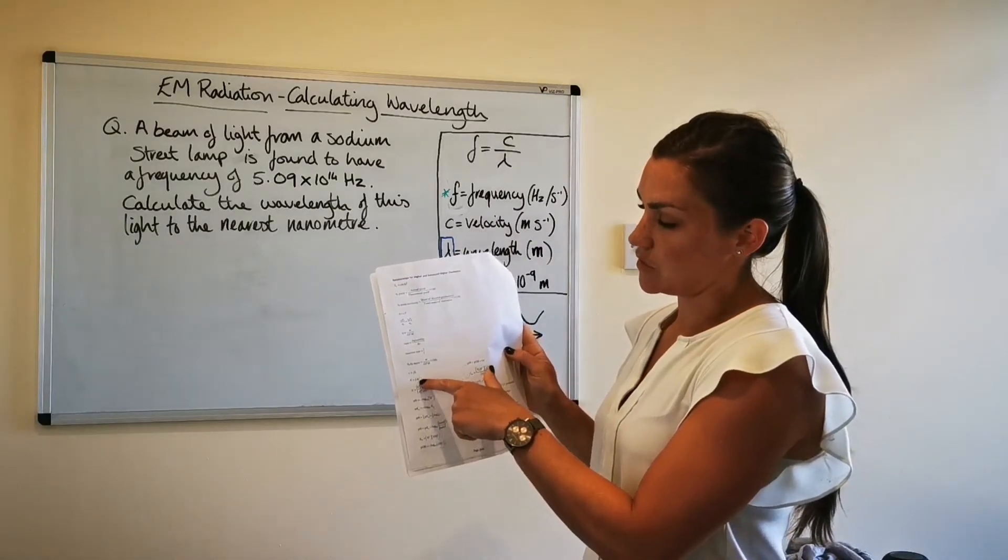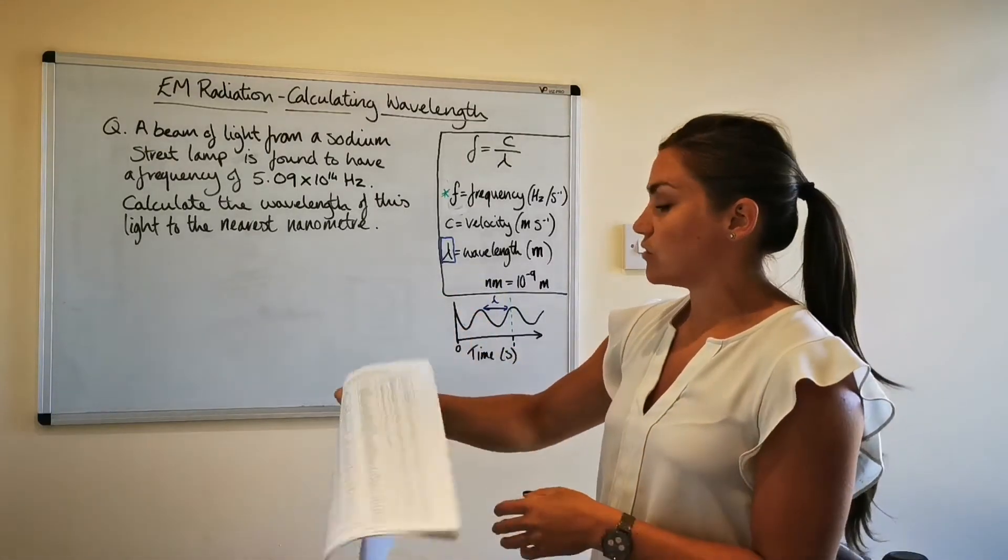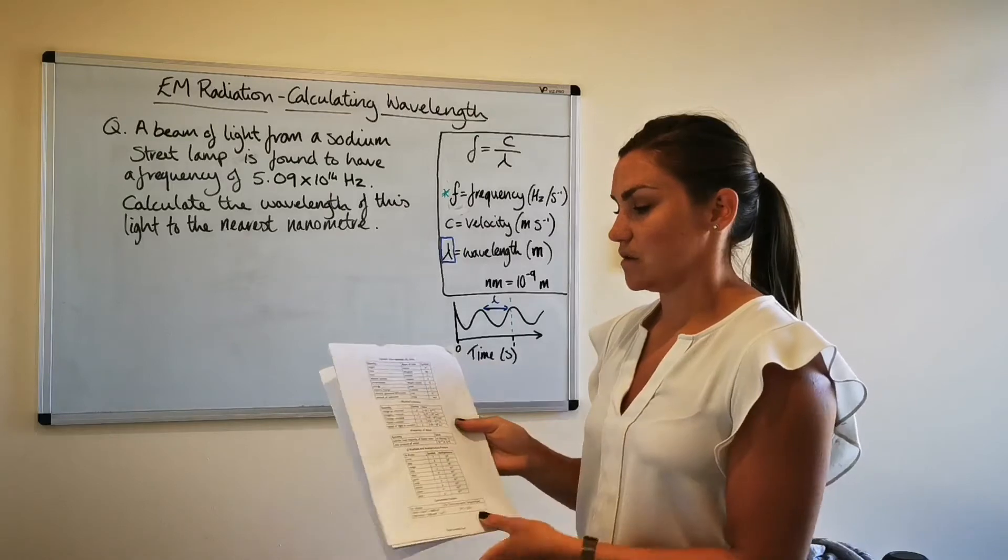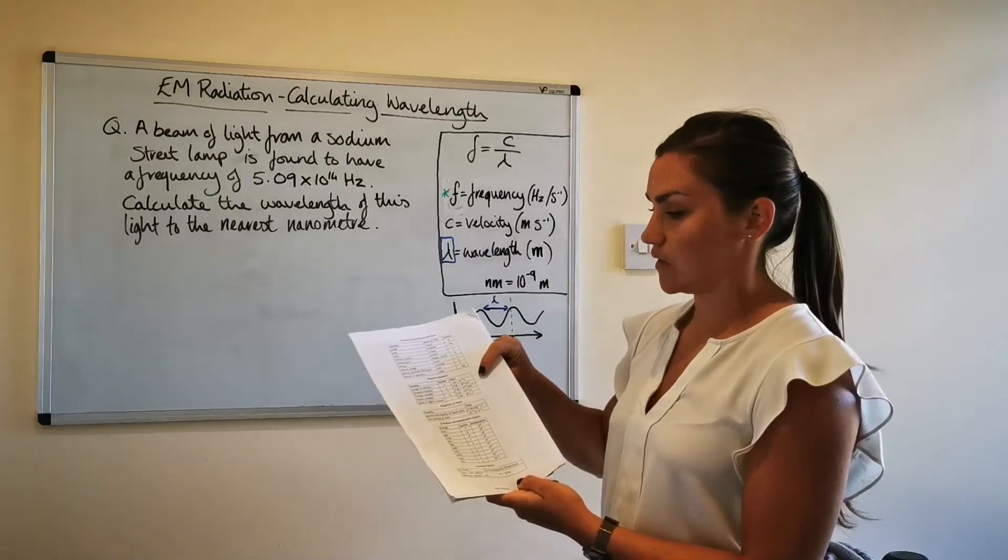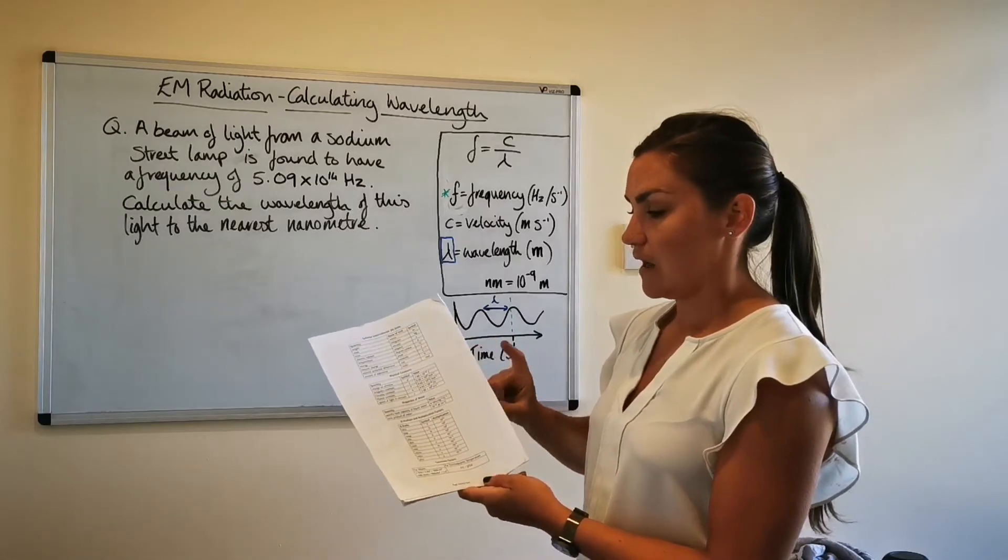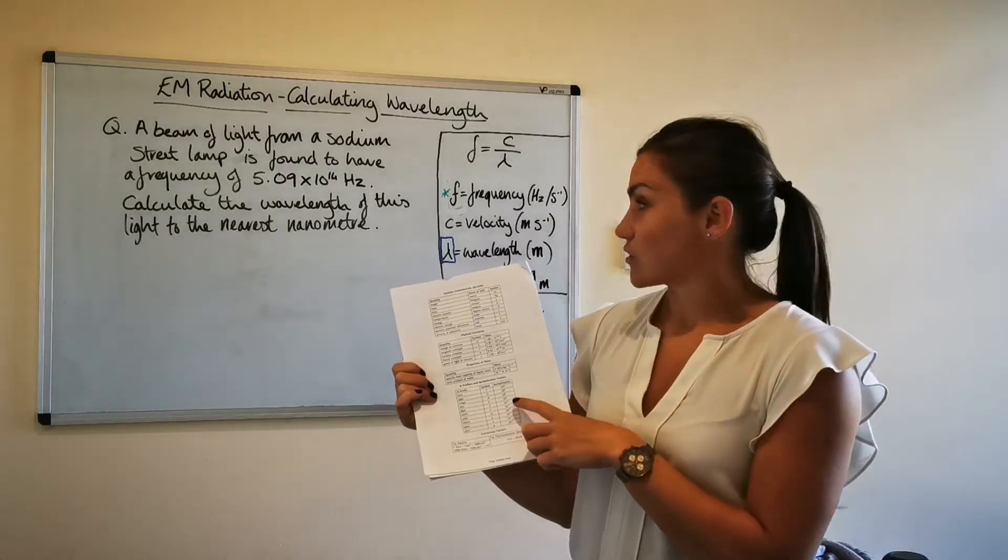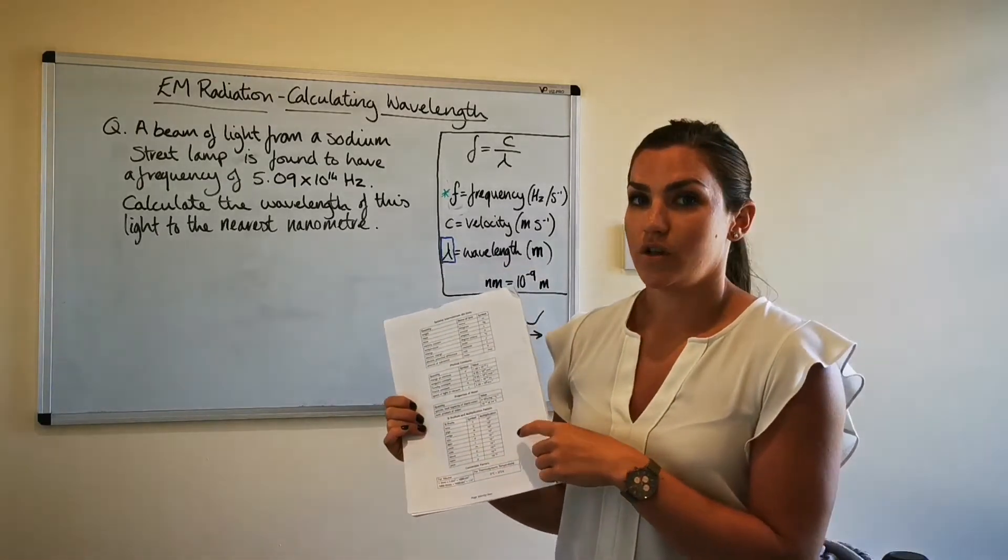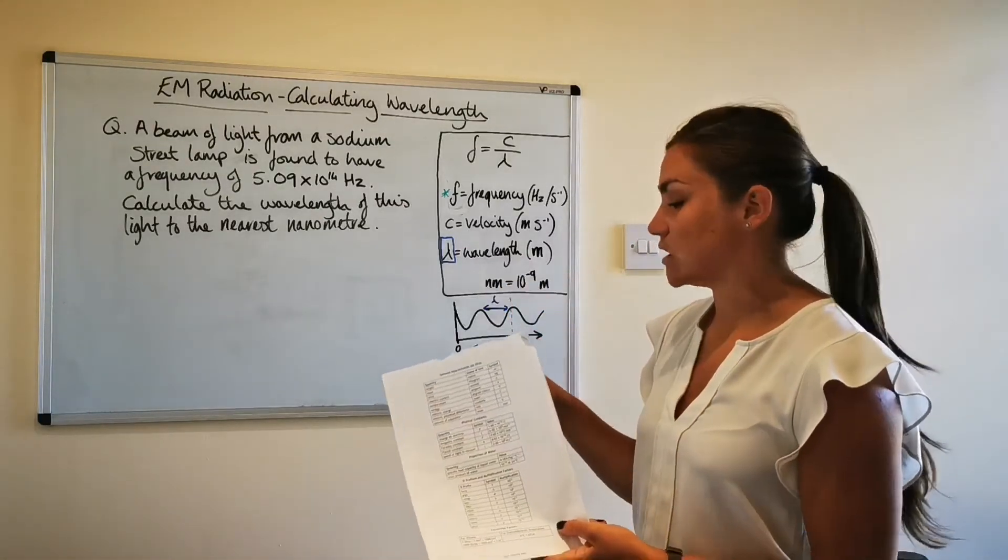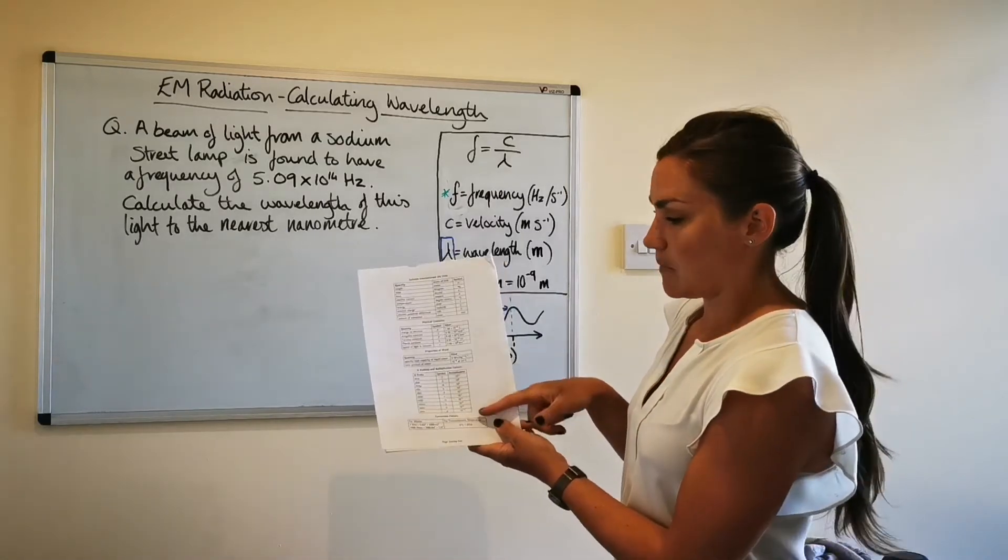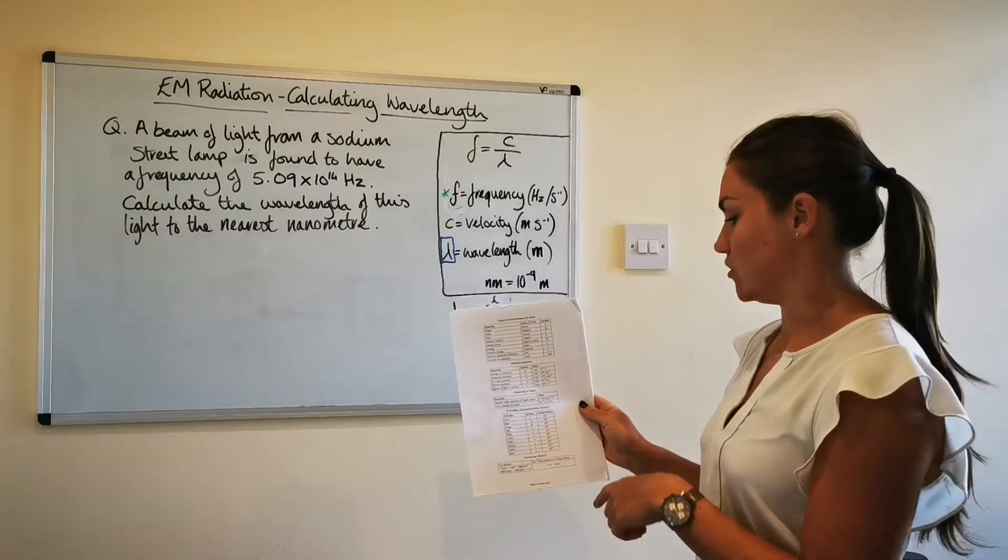Later on we'll move on to use the one that's for calculating energy and then you'll also need the very back page of the data booklet which has got all the physical constants for any of the calculations you'll do in advanced higher chemistry and then also the multiplication factors table is helpful as well because there's quite a bit of unit conversion involved in this mostly converting from meters to nanometers but that tells you basically how many nanometers or how many centimeters are in a meter or vice versa so that table is really useful as well.